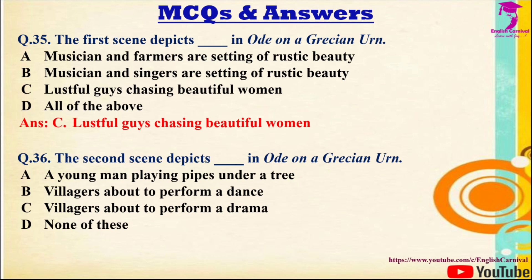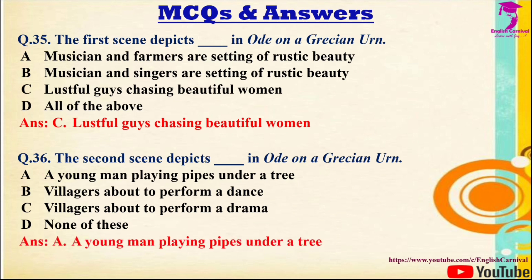Question 36: The second scene depicts — in Ode on a Grecian Urn. Options: A) A young man playing pipes under a tree, B) Villagers about to perform a dance, C) Villagers about to perform a drama, D) None of these. The correct answer is A — a young man playing pipes under a tree.